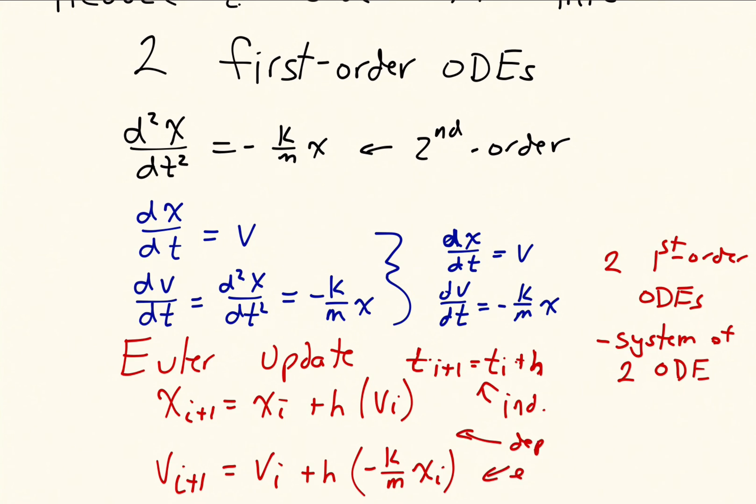And I'm stressing that because usually in a lot of examples, x is our independent variable and y is our dependent variable. Usually we solve equations that have dy dx is equal to something. Here we have dx dt is equal to v. So x has kind of switched spots, so that's why I'm stressing it. But that's how we can reduce a second-order equation into two first-order equations. In the next video, I'll show how we can implement those equations in that update.